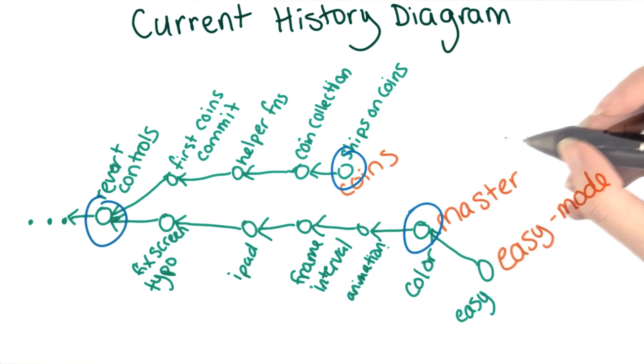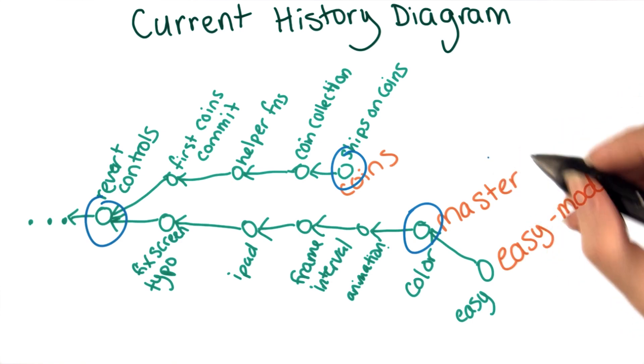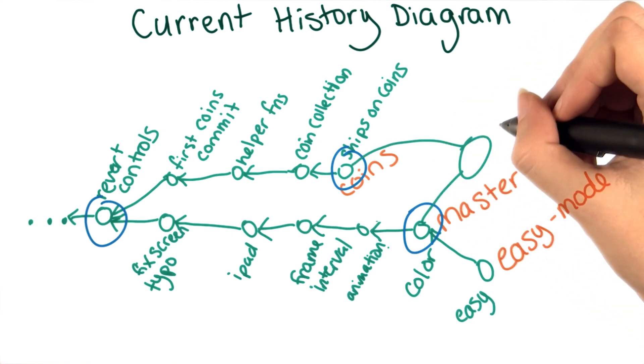Commits are the basic building block of Git, so it probably isn't that surprising to you that this combined version will also be a commit. But what will be the parent of this new commit?